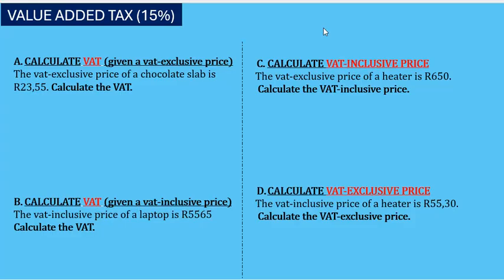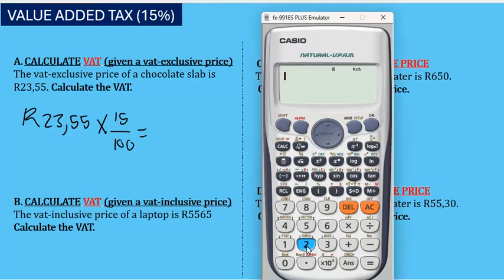If you're calculating VAT using a VAT exclusive price, that's easy. You take the amount — in this case R23.55 — and multiply it by 15 over 100. The answer is 3 rand and 53 cents.